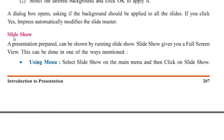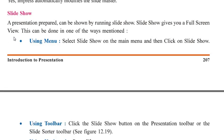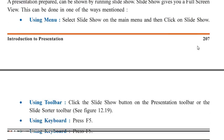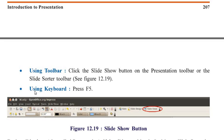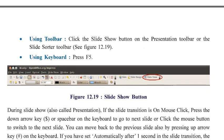Slide Show: after creating all the slides and wanting to play the slide show, a presentation can be shown by running the slide show, which gives a full-screen view. This can be done in several ways: using the menu, select Slide Show from the main menu and click Slide Show; using the toolbar, click the Slide Show button on the Presentation toolbar. The most common technique is to press the F5 function key — no need for anything else.